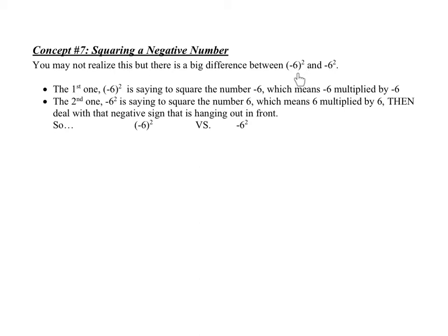A lot of you might be looking at that and saying, well, aren't both of them asking me to square negative 6? And the answer is no. The first one is saying square the number negative 6, which simply means negative 6 multiplied by negative 6. But the second one is missing parentheses, and so in this case, the only thing that is being squared here is the 6.